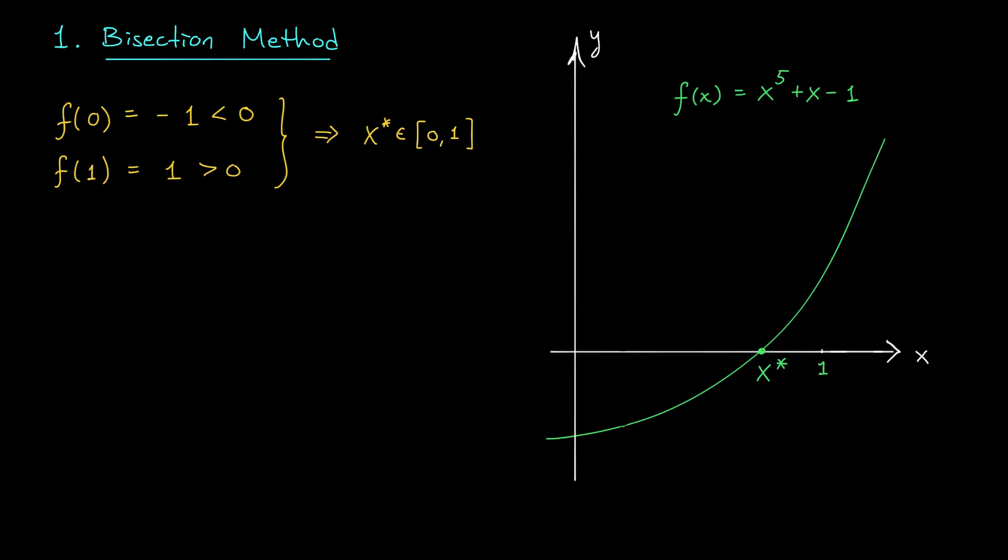If you want to approximate that x star, you can use what's called the bisection method. This is by far the most primitive method that we have for approximating a root. The idea is super simple. We already know that the root lies somewhere between 0 and 1, right? So let's bisect that interval, cut it in half, and check what happens at the midpoint.